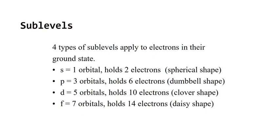Four types of sub-levels apply. You have S sub-levels, which contain one orbital — and one orbital holds two electrons — and those are spherical in shape. You have P sub-shell orbitals with three orbitals, up to six electrons in a dumbbell shape. The D sub-shell has five orbitals, ten possible electrons, and a clover shape for most of them. For the F sub-shell, there are seven orbitals holding up to 14 electrons in a daisy shape.